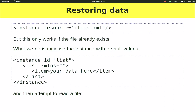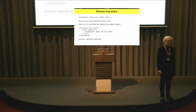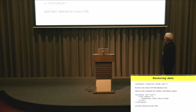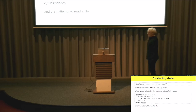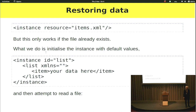I'm going to carry on. Having saved data, I should mention that this technique is what I should have done in that earlier example where you needed to include the items.xml file. What we're now going to do is read back the saved data, but if it's not there, do something sensible anyway. We start with our instance initialized with default values, and then attempt to read the file. We have an instance with resource equals items.xml, which loads that file into the data. The problem is if that file's not there, it fails.